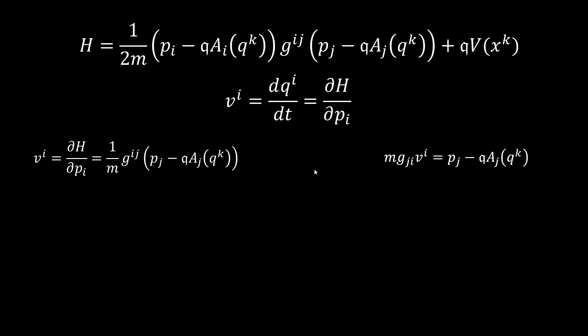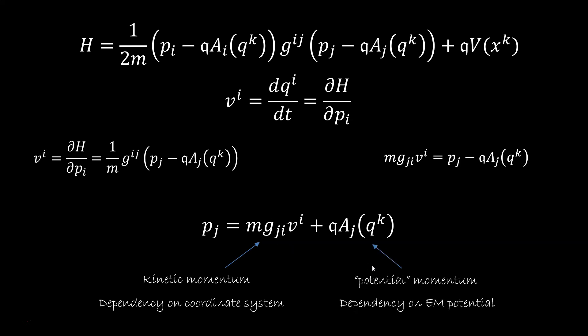The second step is inverting the metric g, so we have an expression for p. p is mgv plus qa. The first part we call kinetic momentum. We know that there will be a dependency on the coordinate system through g. The second part we call potential momentum. This is similar to energy being kinetic energy plus potential energy. We know the dependence on the magnetic force through the potential, so let's look at this second part.